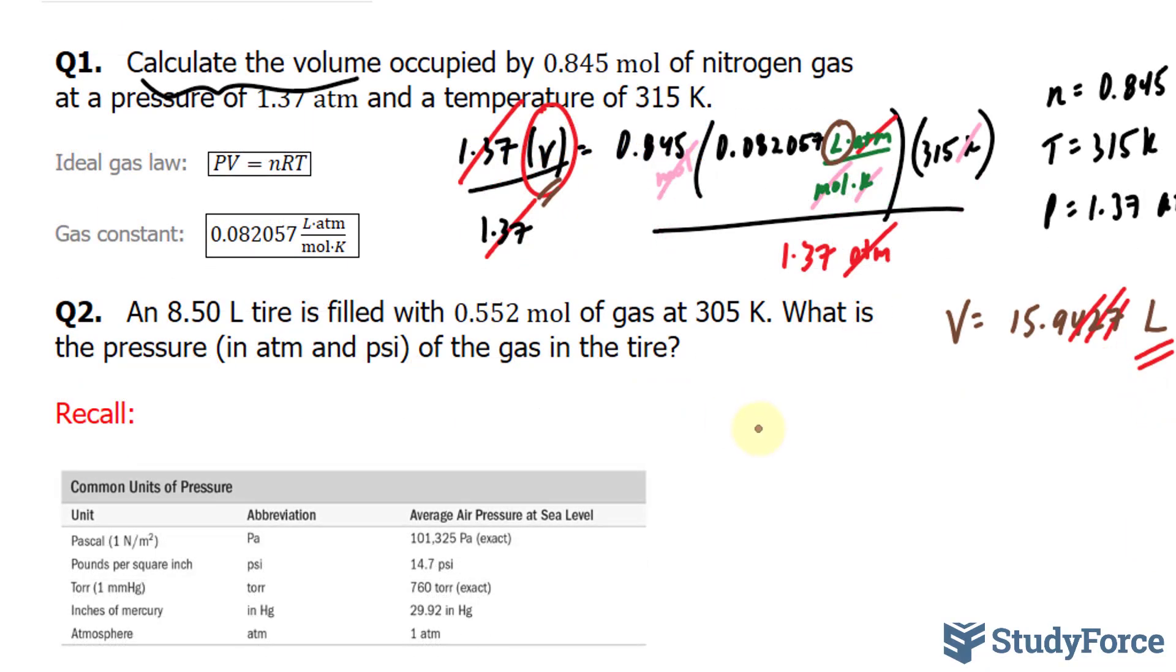Let's start off by writing out everything we know. We know that the volume is 8.50 liters. The number of moles is 0.552 moles. And the temperature is 305 Kelvin.